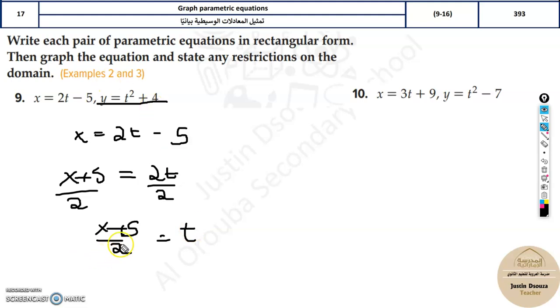Now, t value is X plus 5 divided by 2. So what you do over here? Y equals, open the bracket, X plus 5 divided by 2, the whole square. So what you are doing is this t value, you are just substituting over here. Now it is in terms of X, then plus 4.